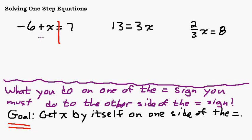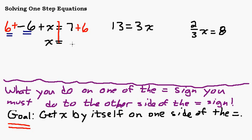For negative 6 plus x equals 7, we need to get rid of the negative 6 on the left-hand side. Since it's being added, I use the addition property and add 6 to both sides. 6 plus negative 6 makes 0 — that's what I wanted. So I end up with x equals 13, because 7 plus 6 is 13.